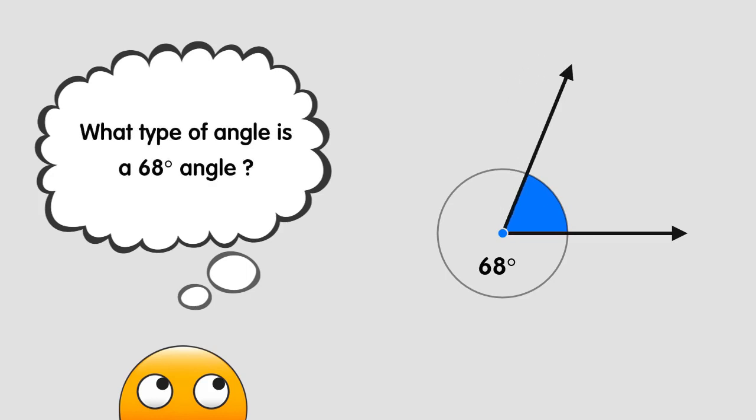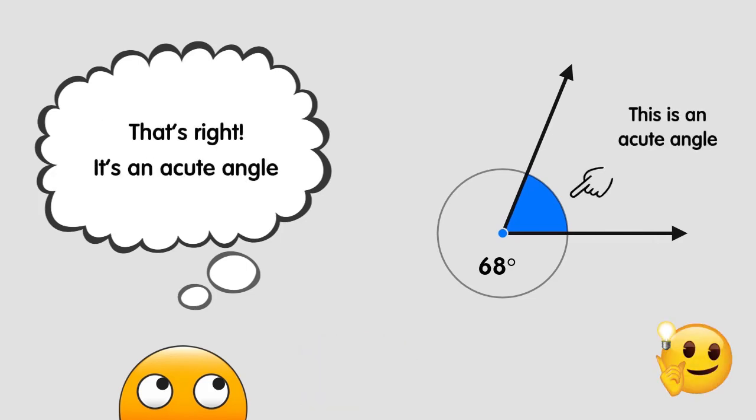What type of angle is a 68 degree angle? That's right, the answer is an acute angle because an angle of 68 degrees is an angle less than 90 degrees.